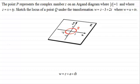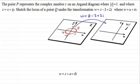So what we're looking for is the locus of a point Q which represents the complex number w under this transformation in the w plane. To do this, we'll put down what we're given, which is the modulus of z equals 1, and we've also got this transformation that w equals z minus 3 plus 2i.